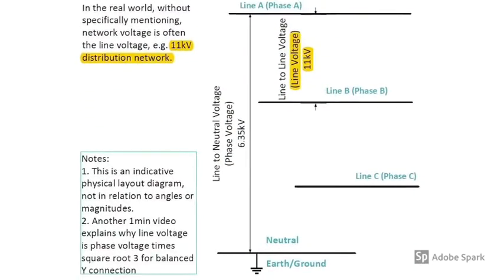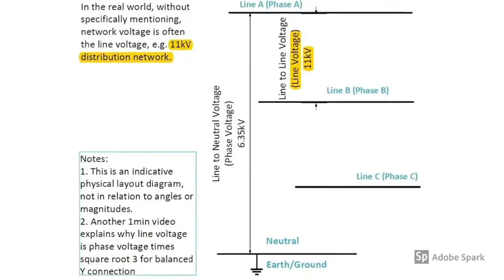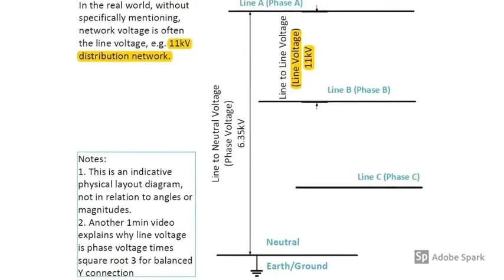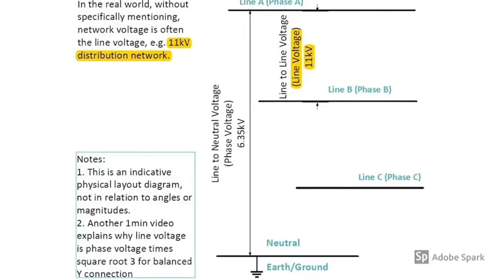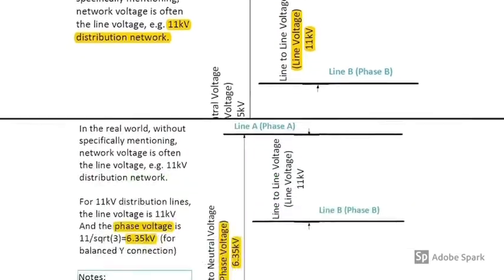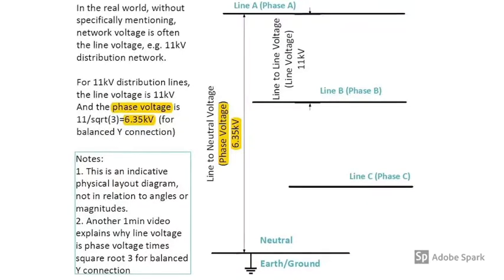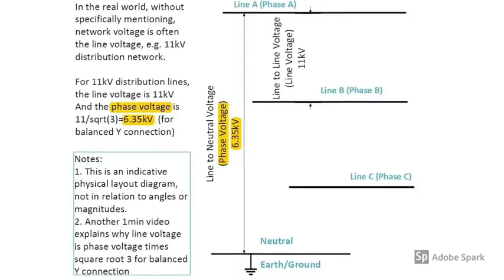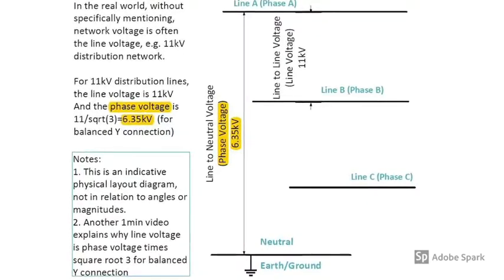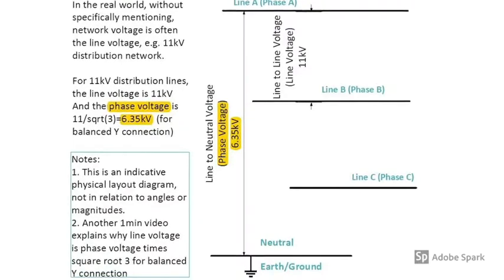In the real world, without specifically mentioning, network voltage is often the line voltage. For example, 11kV distribution network in southeast Queensland. The line voltage is 11kV, the phase voltage is 11 divided by square root 3, which is 6.35kV for balanced wye connection.